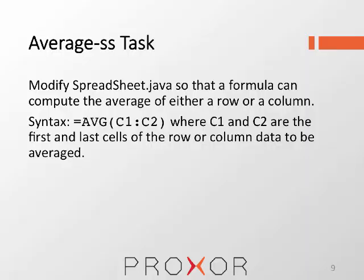Let's take a look at the readme for average ss. It begins by saying: modify spreadsheet.java so that a formula can compute the average of either a row or a column. Now there are things that spreadsheet knows how to do with respect to its cells — namely, it knows how to add, subtract, multiply, and divide. So this task is to extend that collection to include averaging.